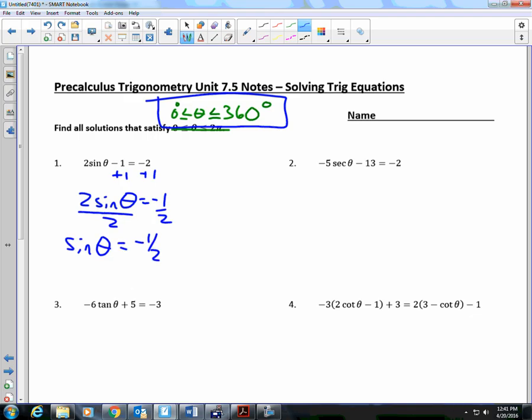Now you're just trying to answer that single question: Where is sine of theta equal to negative 1 half? Well, there's a way in which we answer those types of questions. We start by answering this question: Where is sine negative? 3 and 4. Negative in the 3rd and the 4th quadrants.